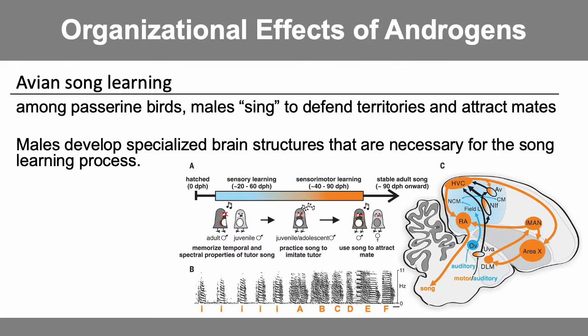Among most passerine birds, males will sing to defend territories and attract mates. This singing is different from the calls we hear at this time of year — singing is a more robust, intricate repertoire of multi-syllable notes that we hear a lot in the spring. This is hormonally activated with surges of testosterone driven by increasing day length, which is what we get when we transition from winter to spring. But it's also under organizational effects: males develop specialized brain structures that are necessary for the song learning process, and this is driven by exposure to testosterone.